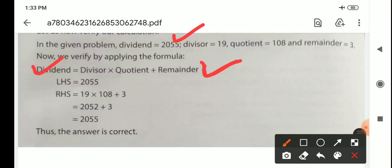RHS side means divisor, quotient, remainder. Divisor is 19, quotient is 108, remainder is 3. We just put the number into our formula. So 19 multiply 108 plus 3, we get 2055.